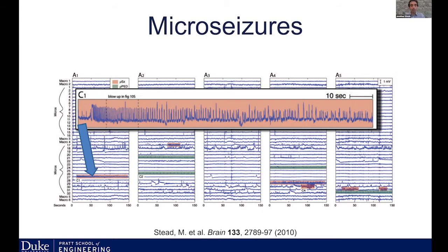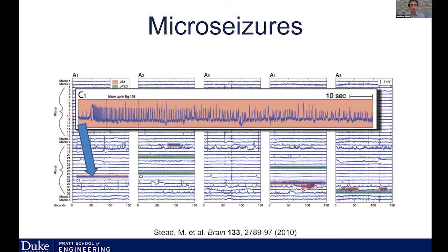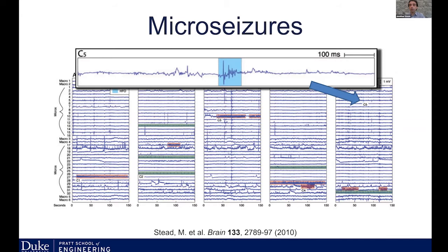They also identified microscale periodic epileptiform discharges and high frequency oscillations, again constrained to a small number of electrodes and barely observed even a millimeter away. So we'd like to sample at very high resolution from large areas of the brain.